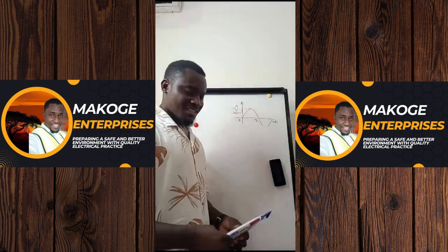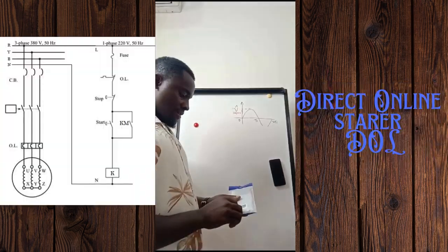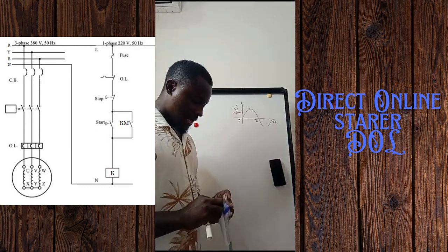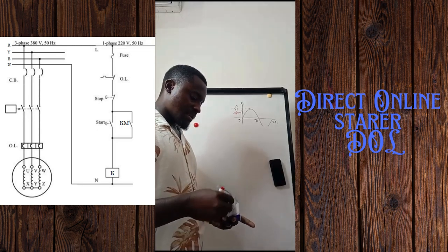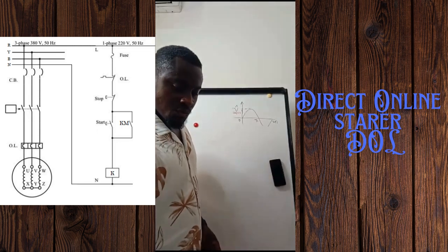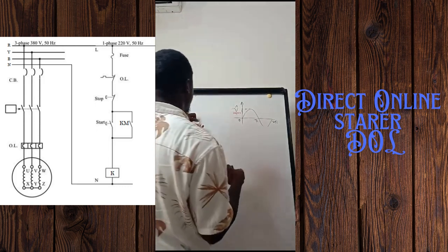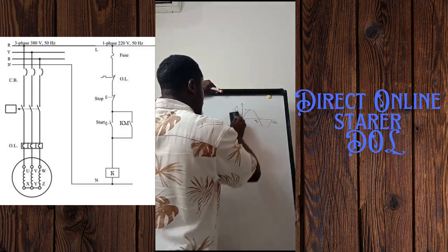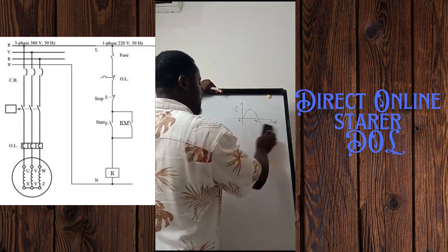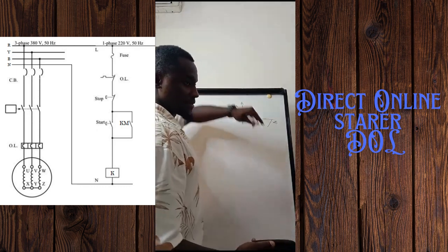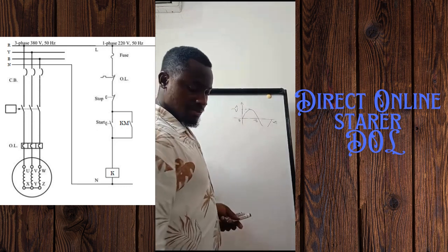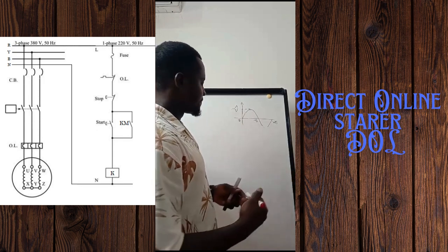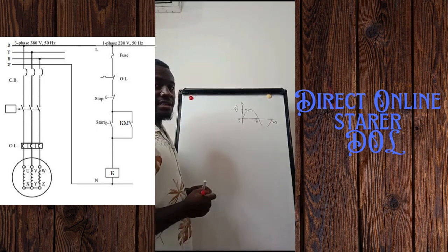Good day everyone, you're watching Makoku Enterprises. Today we are going to learn about how to read a direct online startup. We'll cover how to read a direct online startup and then carry out the job, perhaps working on a motor control panel where you need to assemble the different devices in the panel so that you can start an electric motor.